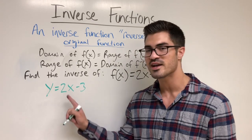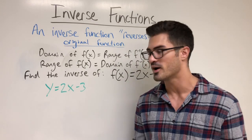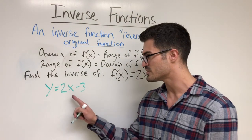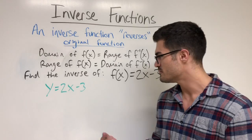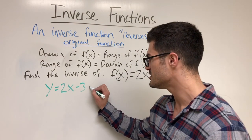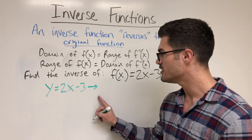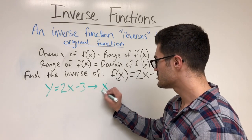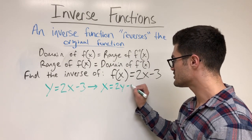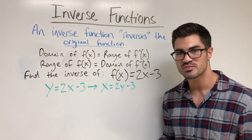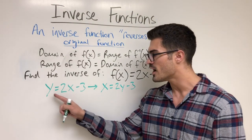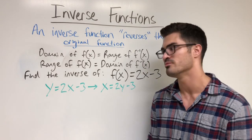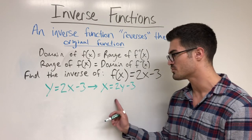So I switch x and y — where I see y I replace with x, and where I see x I replace with y. This is not algebra, I literally just switch them. So I get x equals 2y minus 3. Now I solve for y using algebra.